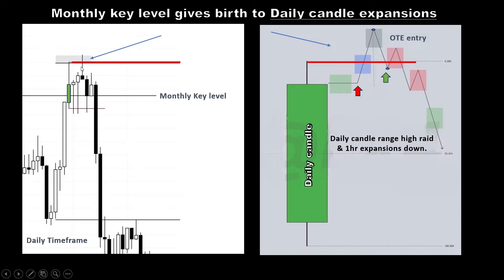This is a daily candle — when this daily candle shown with the blue arrow is printing and not closed yet, you can see on the right image there will be a beginning of a market maker sell model happening inside this daily candle. We know that on the daily time frame we had a monthly key level, and that monthly key level produces daily candle expansions. So we know the daily candle is going to reverse at this monthly key level.